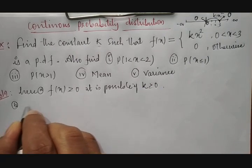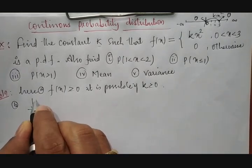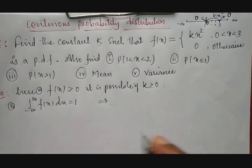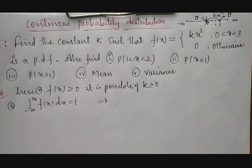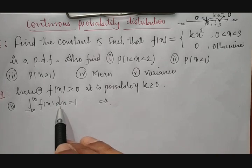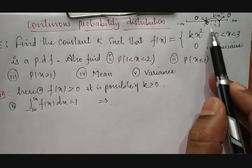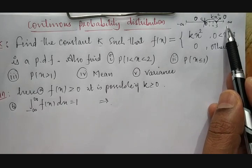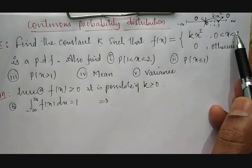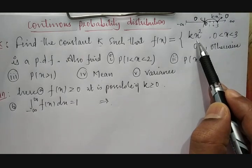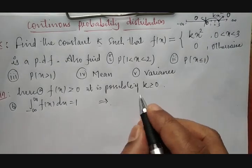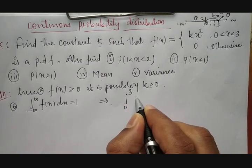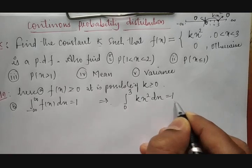The second condition is that the integral from minus infinity to plus infinity of f(x) dx must equal 1. Since the functional value is only non-zero between 0 and 3, the integration simplifies to the integral from 0 to 3 of k·x² dx = 1.